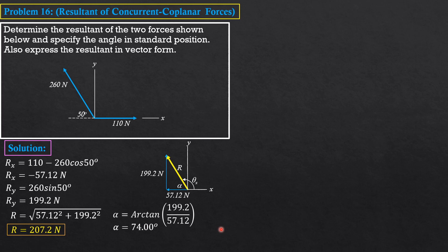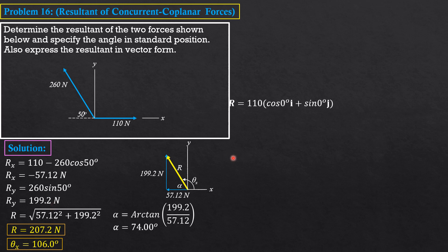Therefore theta_x = 180° − 74° = 106°. In vector form, R = −57.12i + 199.2j Newtons.